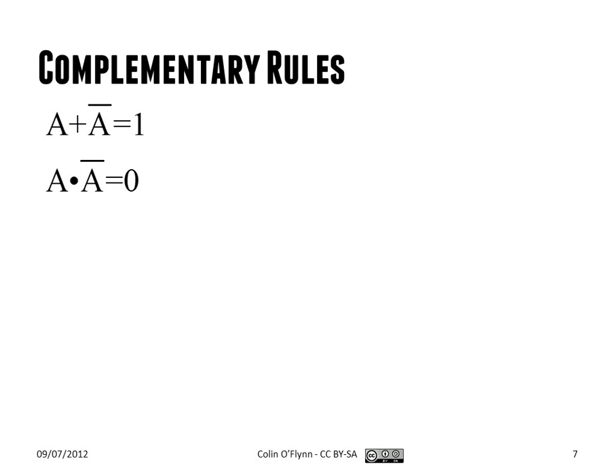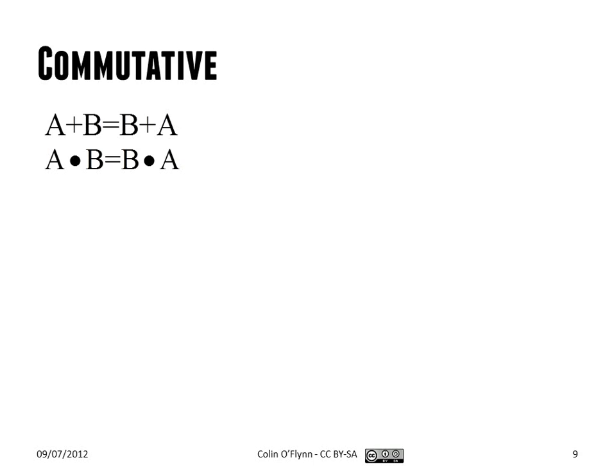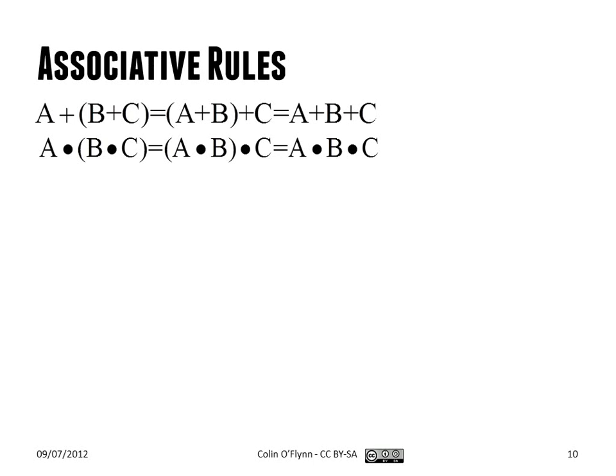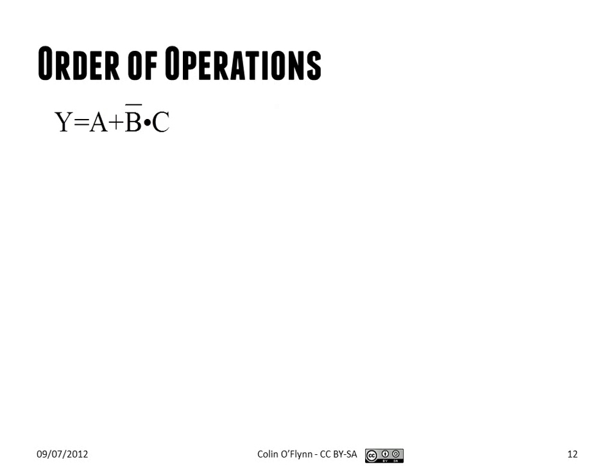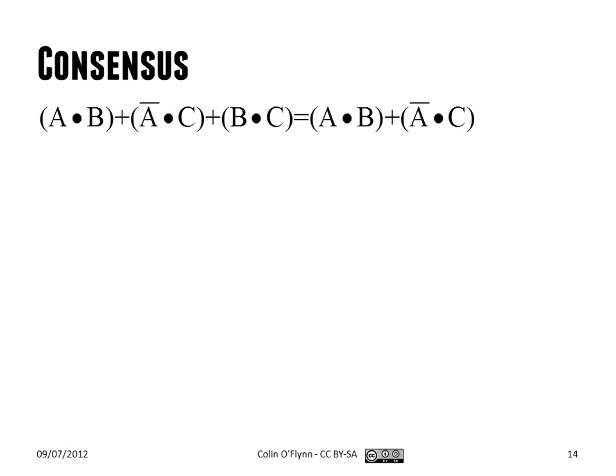Complementary rules define what happens when the inputs are complements of each other — so one input is the inverse of the other. We can build up the bigger rules of boolean algebra from there. One of the important ones to remember is De Morgan's theorem, which is how we convert from using OR gates and NOR gates to NAND gates, and vice versa.